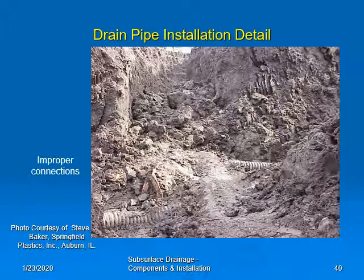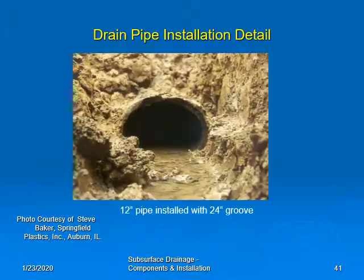It is very important to pay attention around connections. Here you can see an example where the connections were not made correctly — it looks like the trench got too deep and there is a dip in the lateral pipes before they make the connection, which will not provide a good flow characteristic into the main. And finally, here's an example where a 12-inch pipe was installed with a 24-inch groove, and you can clearly see the deflection on the 12-inch pipe where it was not supported properly.